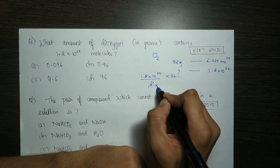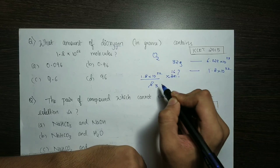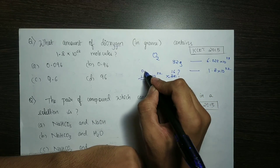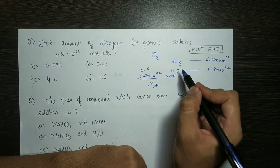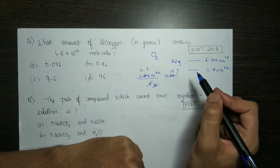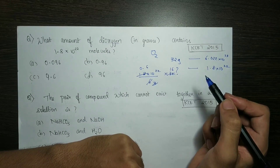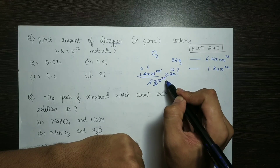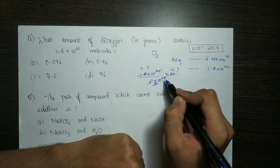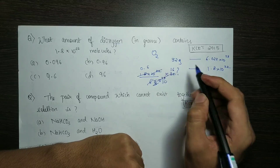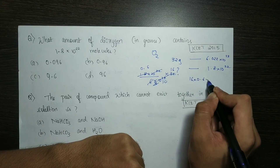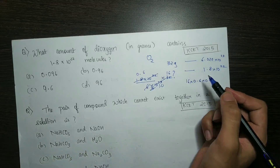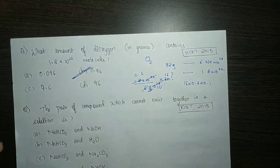So: (1.8×10²²) divided by (6.022×10²³) multiplied by 32. That gives 0.6 × (1/6)×10 into 16 = 0.6 × 0.1 × 16 = 0.96 grams. So option B is correct.